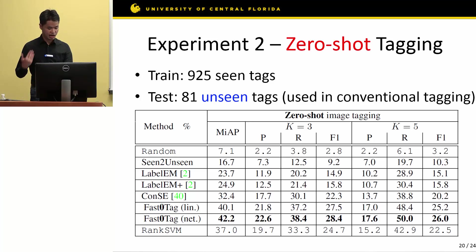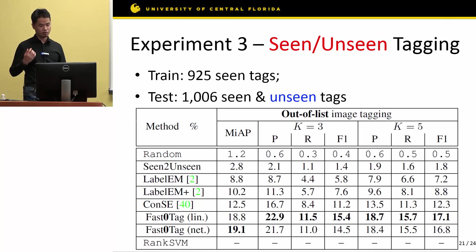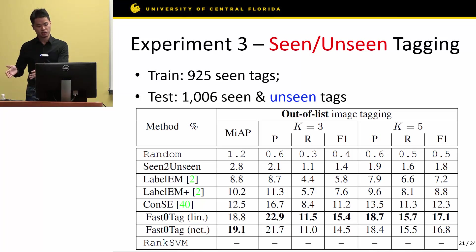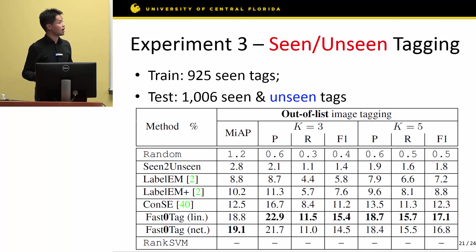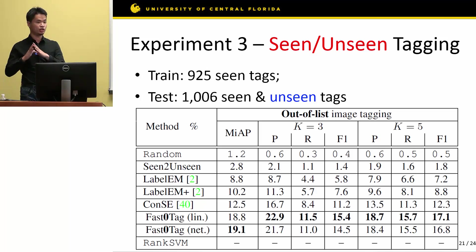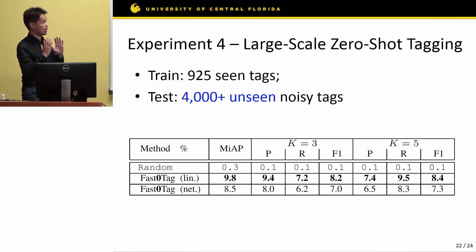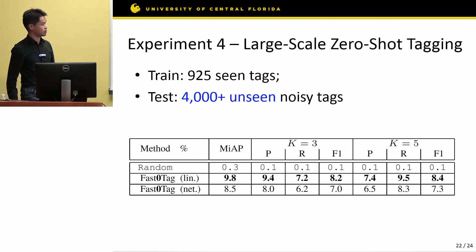Besides conventional tagging and zero-shot tagging, we propose a completely new tagging task we call the unified seen and unseen tagging task. In this task, we train our model on a limited set of tags and test on a tag set containing both seen and unseen tags. Specifically, we train on 925 seen tags and test on 1,000 seen and unseen tags — the union of the previous two tasks — and our linear approach outperforms other methods. Finally, to prove scalability, we train on 925 tags and test on 4,000 unseen noisy tags, and our method is still much better than random.